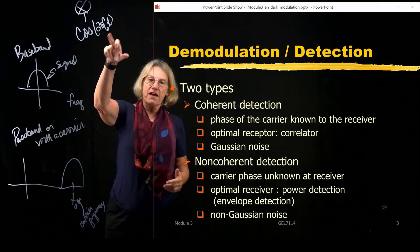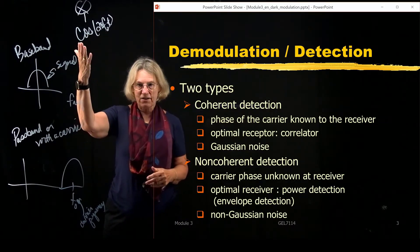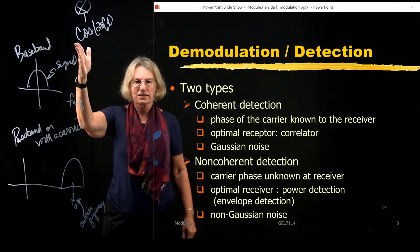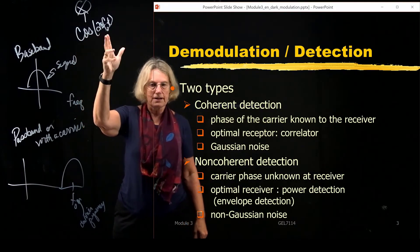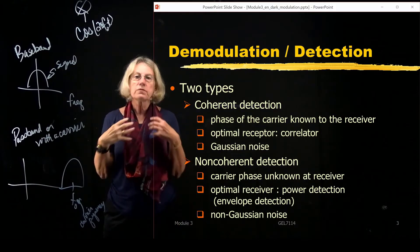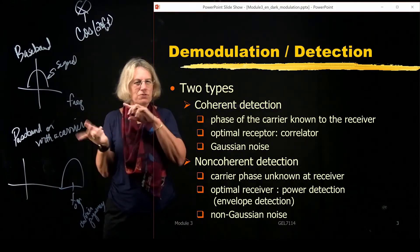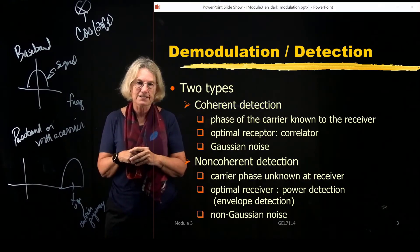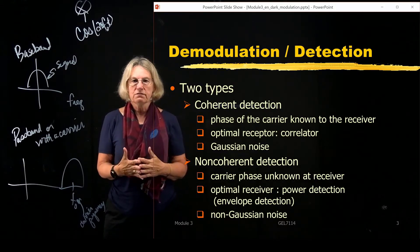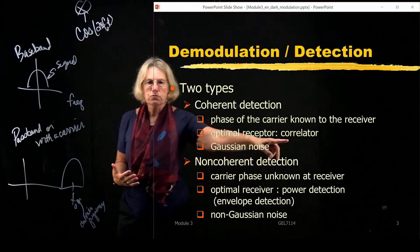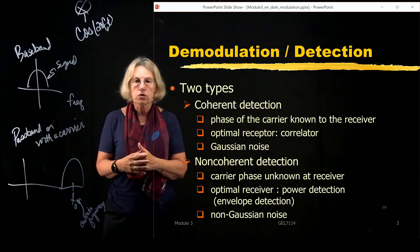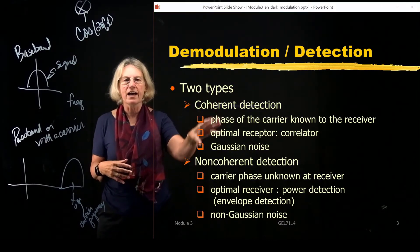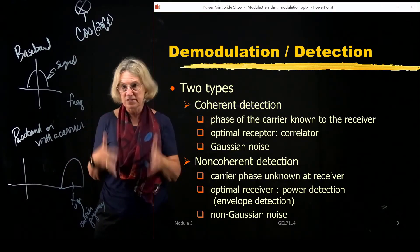There may be a phase offset to this oscillator. In coherent detection, we assume that whatever that offset is, we know it. When we know the phase, we typically take it to be equal to zero. Knowing this phase adds complexity to the system. In coherent detection, the optimal receiver is going to be a correlator — which we've seen earlier — and the noise statistics are Gaussian.